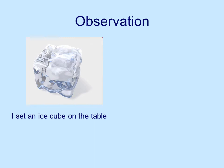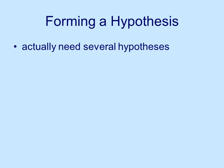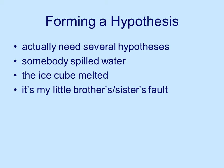Let's take an example. Here's an ice cube. We sit that ice cube out on the table, and when I come back, there's a pool of water — a little bit of ice cube there — but mainly a puddle of water. So I form a hypothesis; actually, you need several hypotheses, because you can't just go down one path — it doesn't allow you to really prove what's going on. One hypothesis: somebody spilled the water on the table. Another hypothesis: the ice cube melted. A third hypothesis — and this is quite common in families — it's my little brother's fault, or it's my little sister's fault; they made the mess.